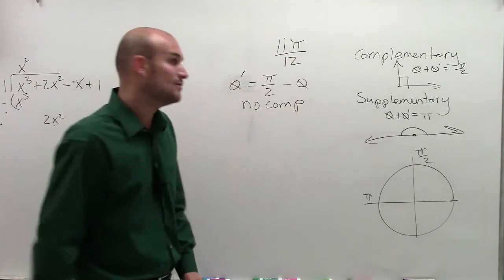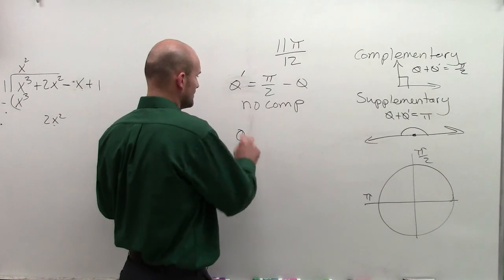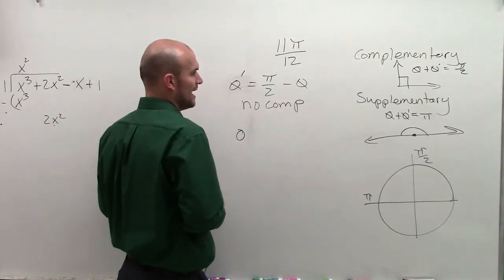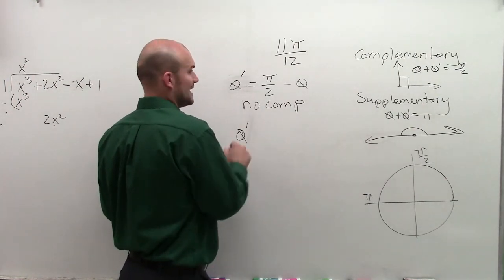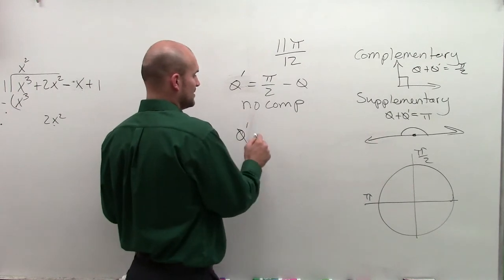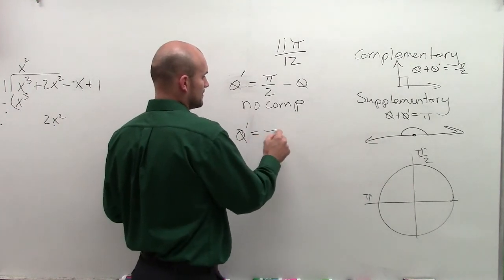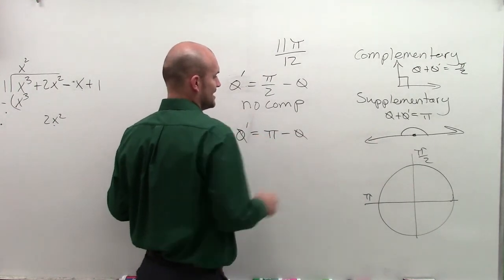However, for supplementary, we can work with this angle, because it is not greater than pi. So what I have is theta prime, which is going to represent my supplementary angle, equals pi minus theta.